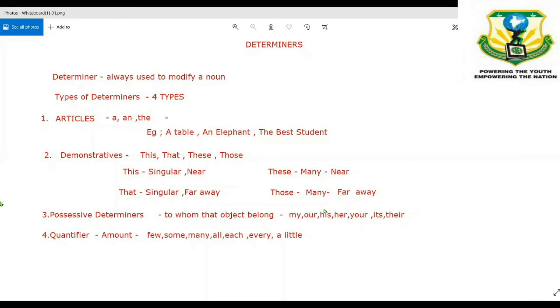Few means when there is a very little amount. I have few chocolates. I need some rice. I have many apples. I completed all my homework. Each and every student will get good marks. I need a little bit of chocolates. All these indicate the amount of noun which we are quantifying. These are the four types of determiners.